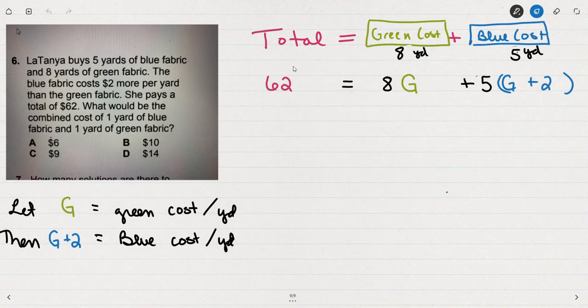So if the total is $62 for eight yards of green fabric and five yards of blue fabric, I'm going to let G represent the cost per yard of the green fabric. G plus two will be the cost per yard of the blue fabric. So we have 62 equals 8G plus 5 times (G plus 2).